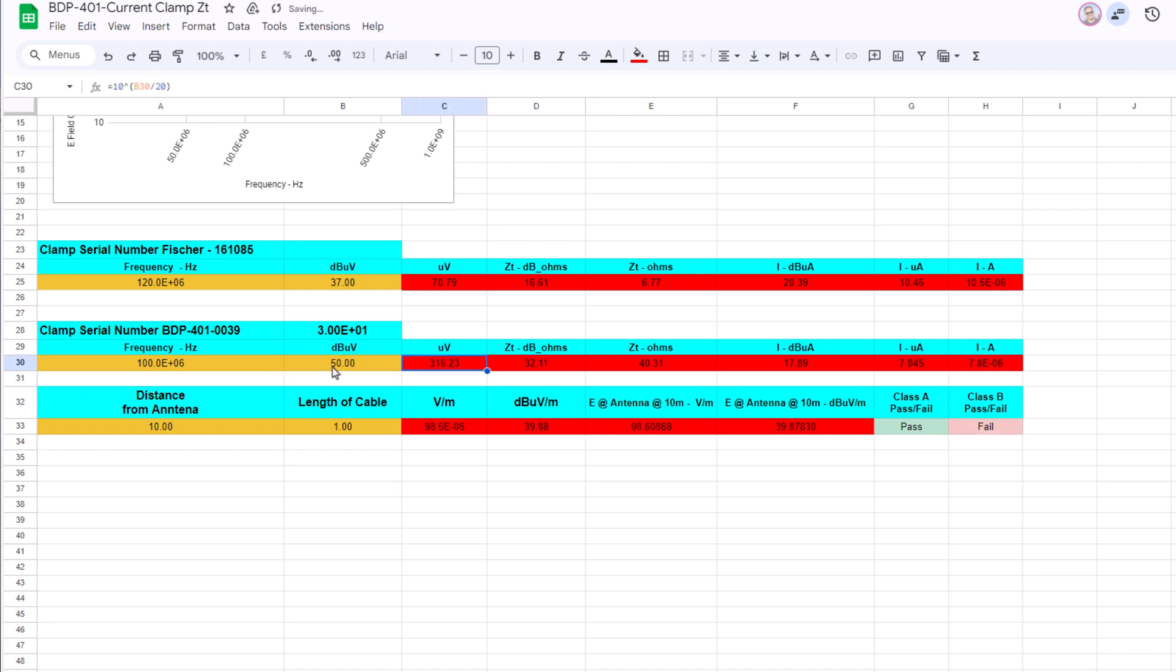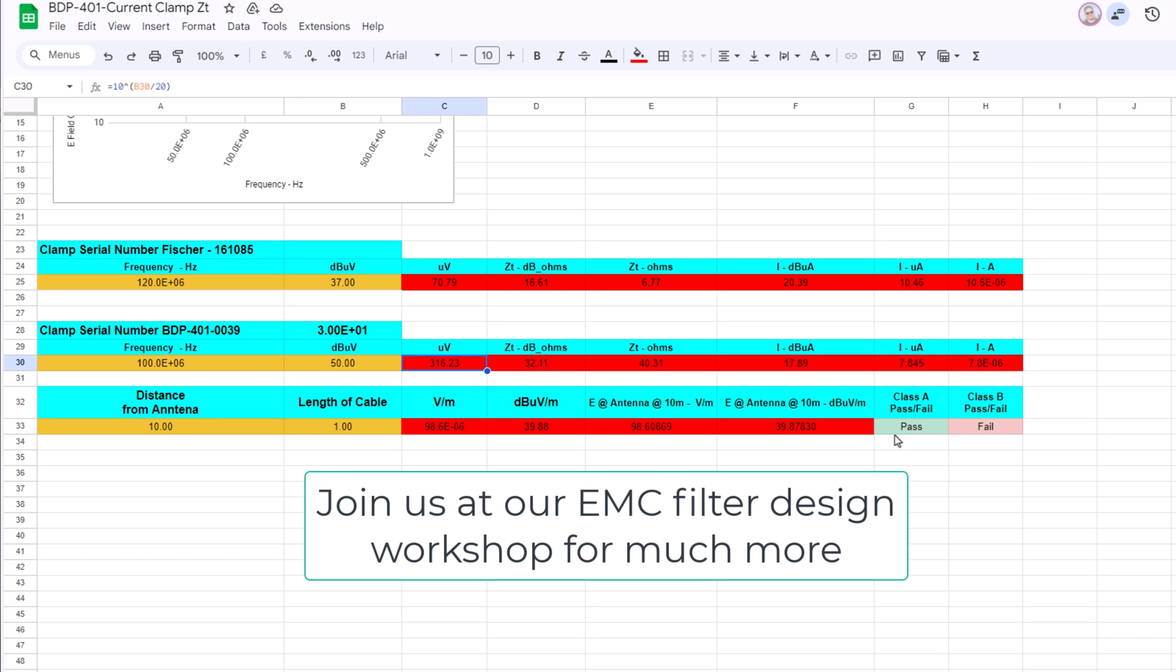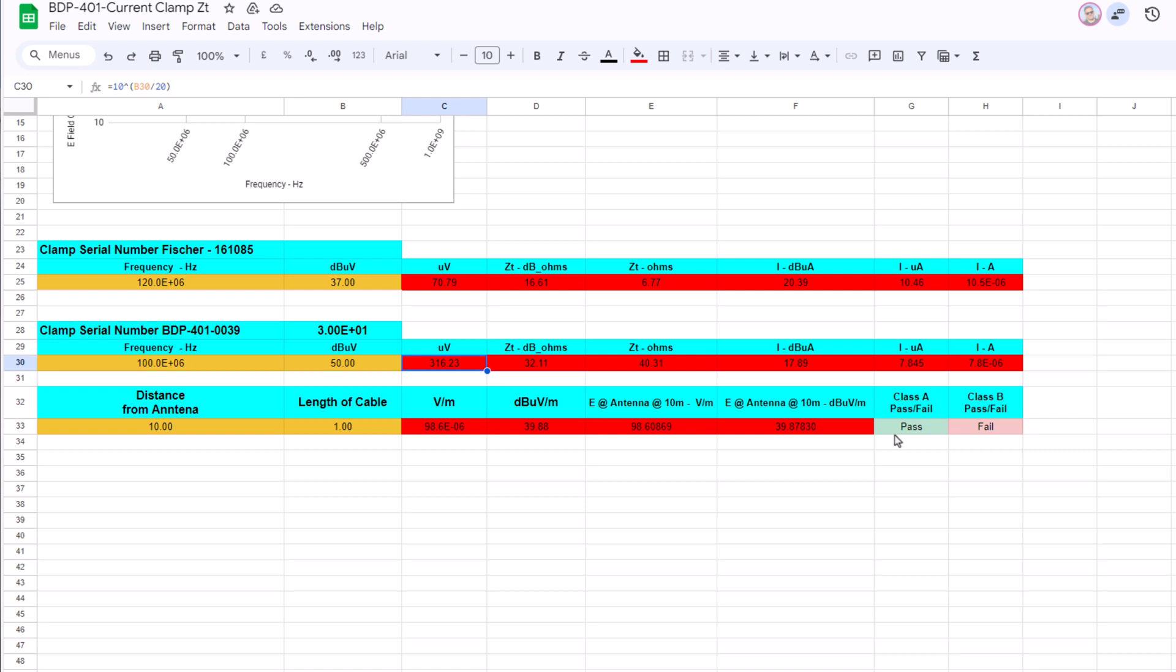And you will read at 100 megahertz on the spectrum analyzer 50 dB microvolts. Based on that the spreadsheet automatically converts it into different units in microvolts, dB microamps and so on.